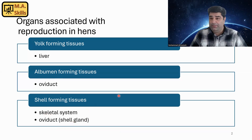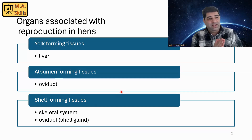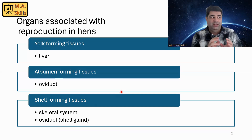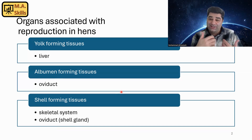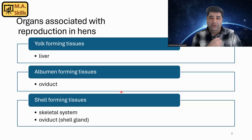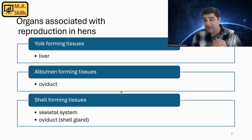Also the skeletal system plays a role. We have two types of bones: structural bones and medullary bones. Medullary bones act like a bank account for calcium deposition. During the pullet phase, they deposit calcium — it's like a savings account, saving calcium for the future laying phase.